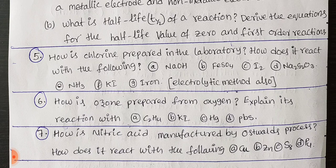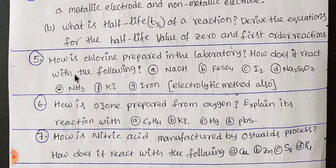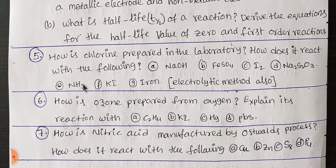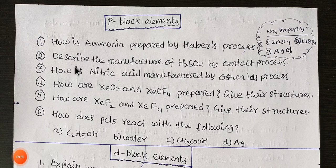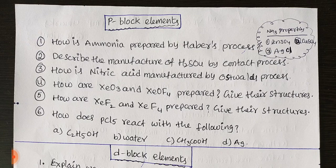Nitric acid reacts with the following. Next: HNO3, ammonia, sulfuric acid. You have 4 marks — you have to see it as well. Students, here you are using P-block elements. You have 6 questions for 4 marks: ammonia, H2SO4 contact process, nitric acid, XeOF4, XeO3 preparation and structures.